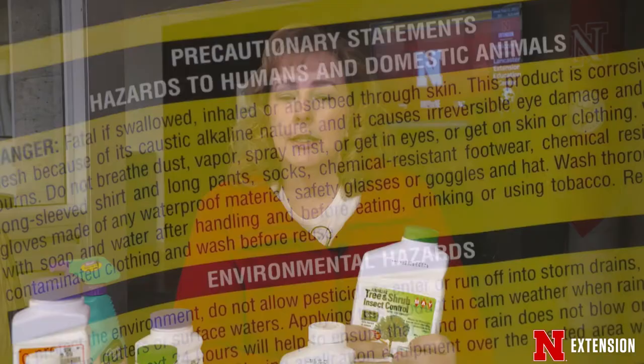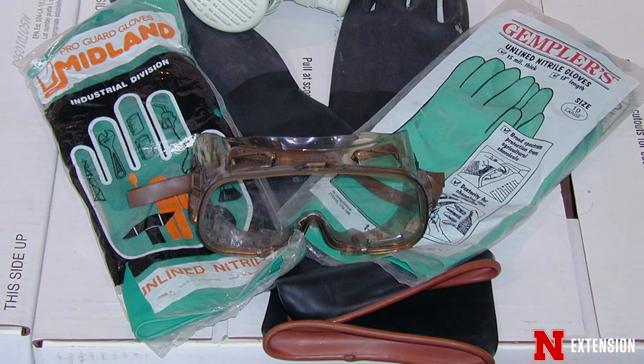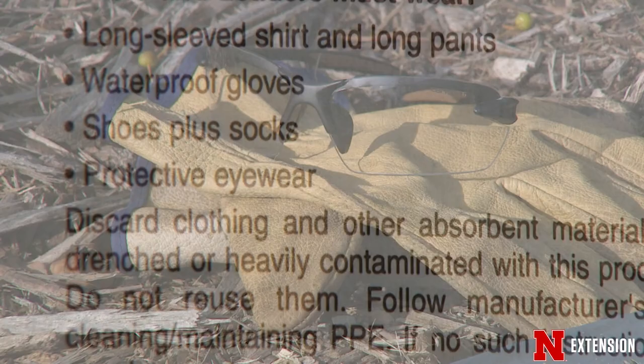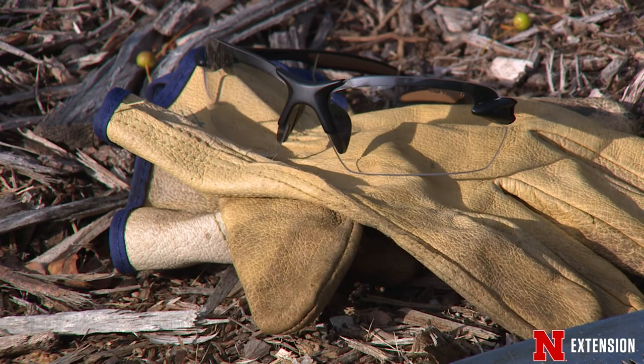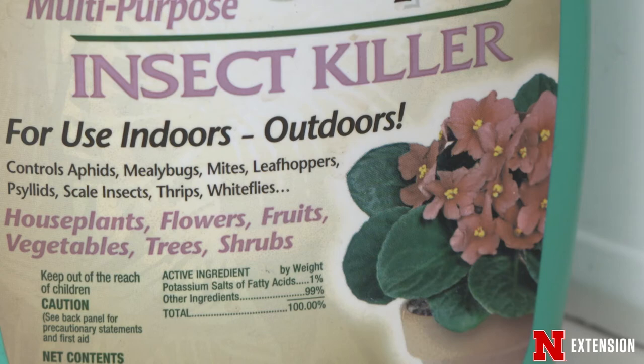You also need to think about how to protect yourself when making an application. The most important thing to look for on the product label is personal protective equipment — what do you need to wear to protect yourself? Typically you'll need to wear a long sleeve shirt, long-legged pants, shoes and socks, and chemical resistant gloves. If additional restrictions are on the label for eyewear, be sure to follow all of those guidelines.